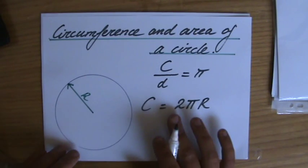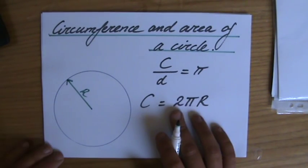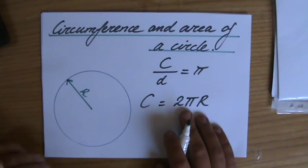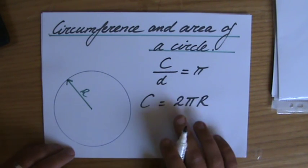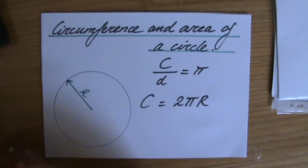So the circumference is 2 times pi, and 2 is a number, pi is a number, so the only unknown, the only variable then, is the radius. 2 times pi times r, 2 pi r.